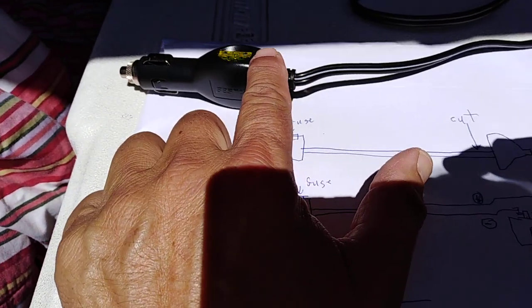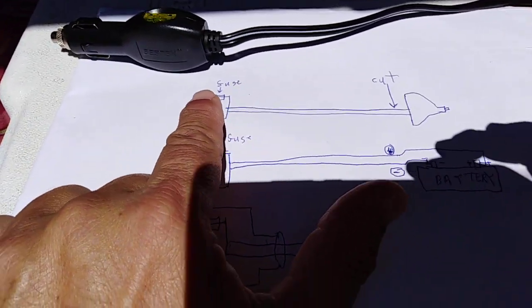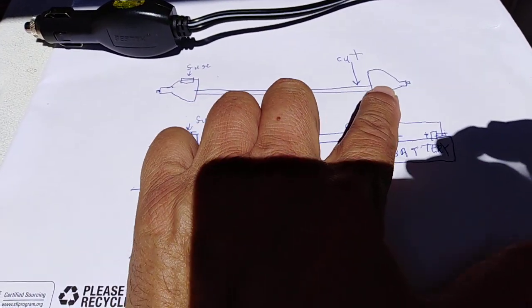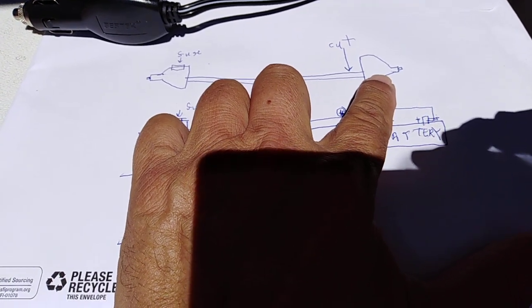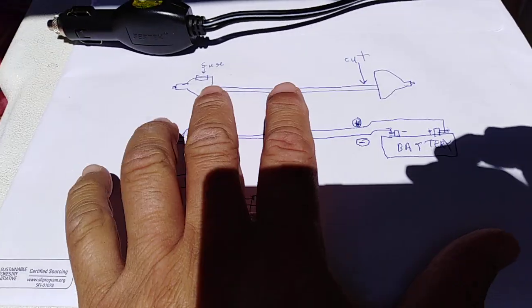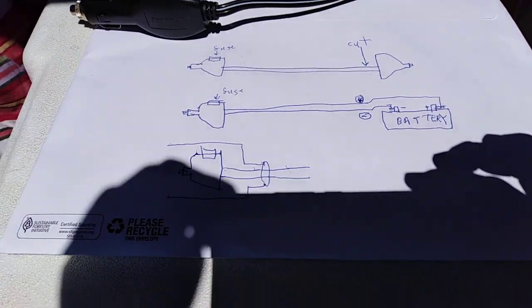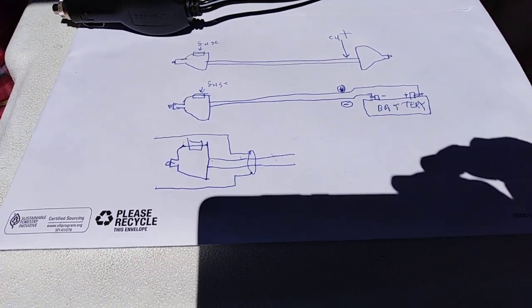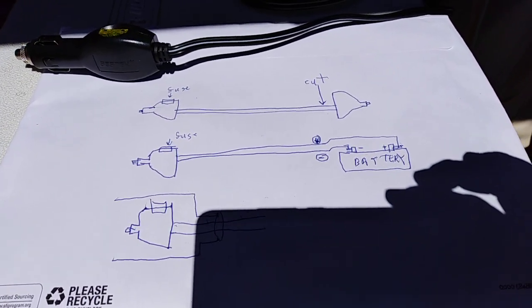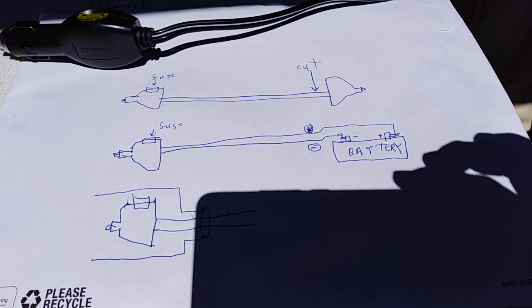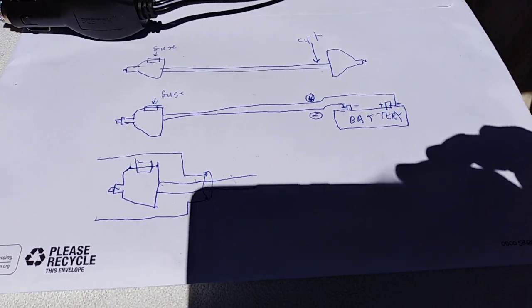My buddy has one of these plugs that you plug into the cigarette lighter, and his has two sides to it—identical male-male connectors. We discussed what to do, so he has two deep cycle marine batteries.